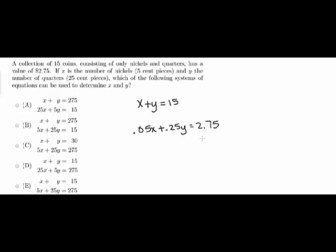That's because this is the number of nickels, so you multiply by its value so the units are in dollars, just as your $2.75 is. Same thing with this y—the value which is $0.25 times y equals 2.75.